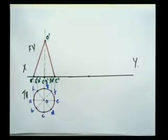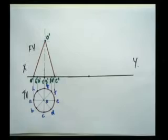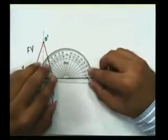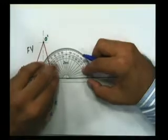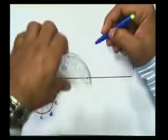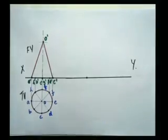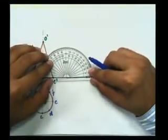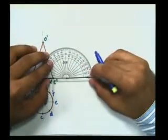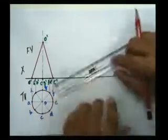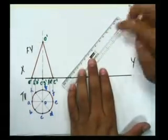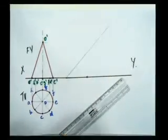I'll mark a point here and first measure 45 degrees. So this is 45 degrees. I need to mark a center first and then mark 45 degrees accordingly. From this point I'll just extend the line. Basically this will be the axis of the cone.